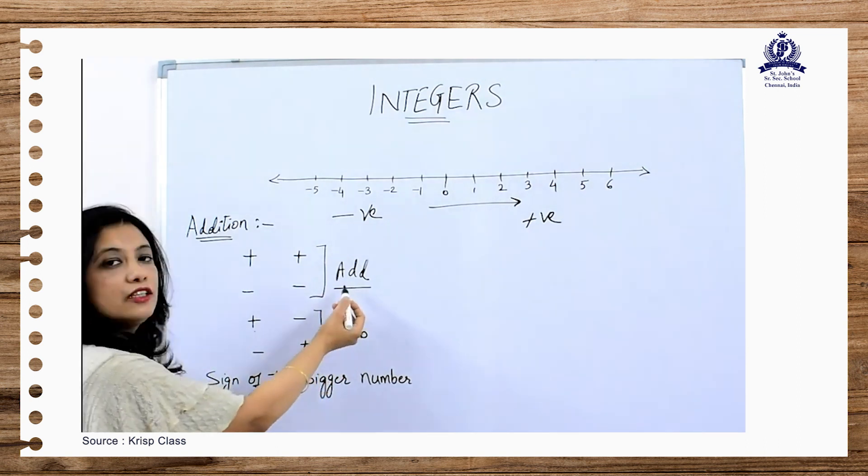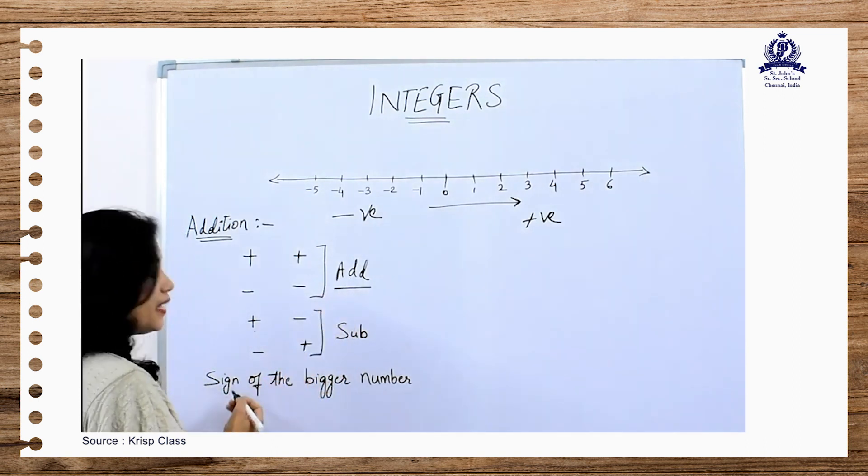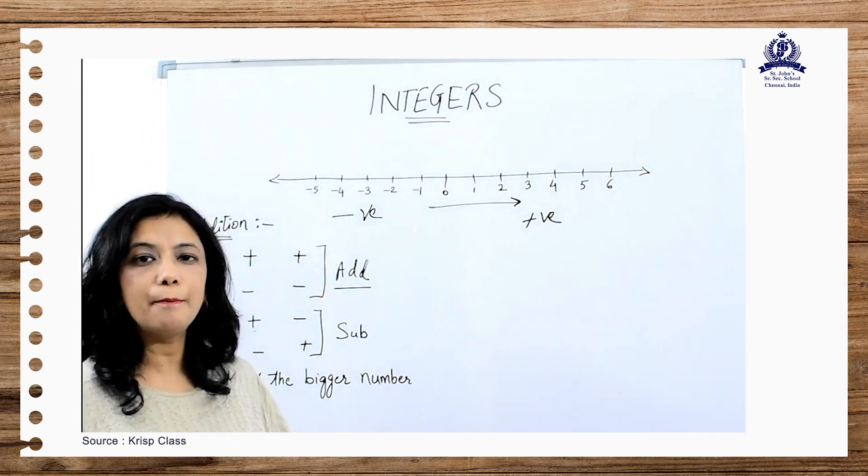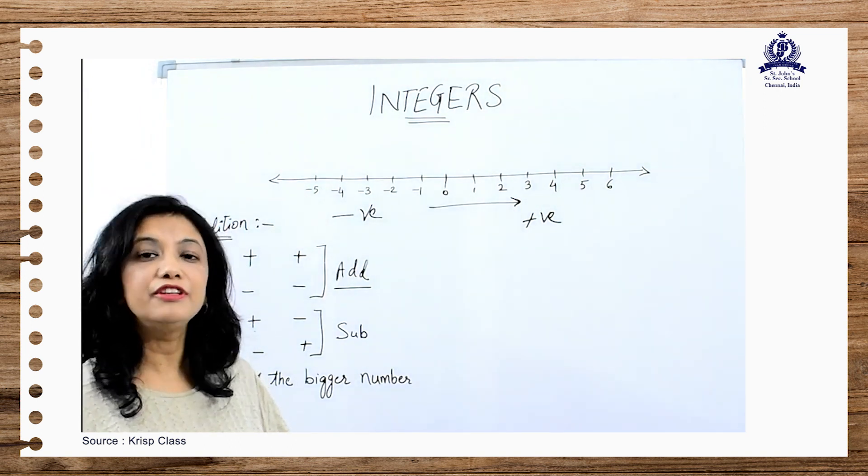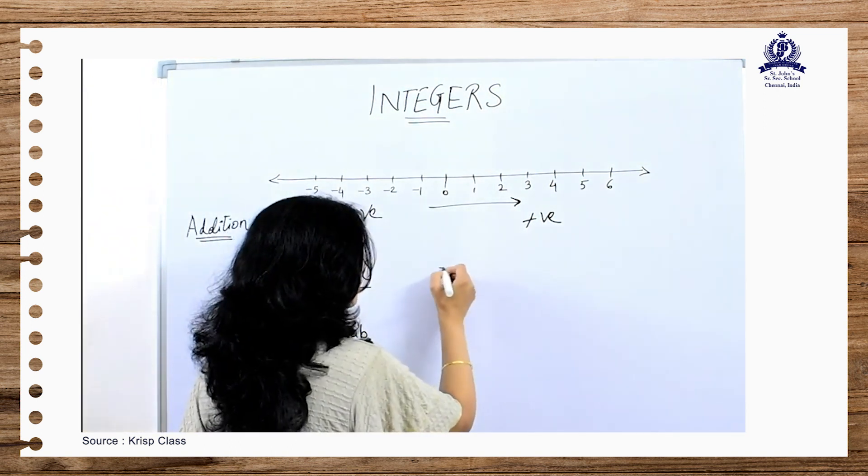So we add those numbers but we have to place the sign of the bigger number. Bigger number means the number which is bigger without the sign.